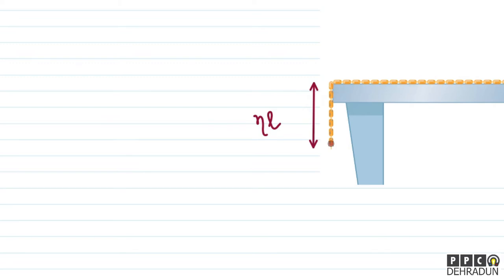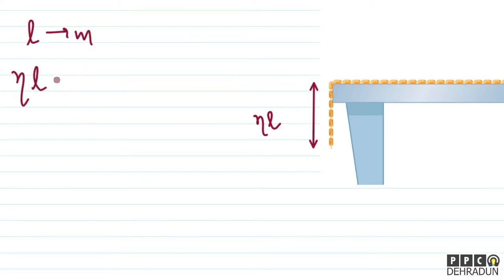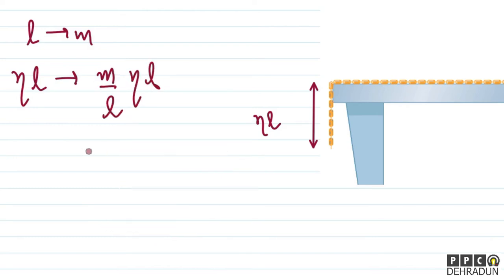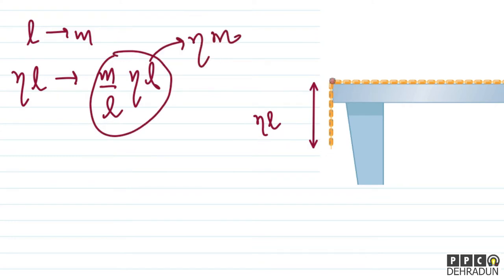हम लोग क्या कह सकते हैं कि इस पूरे portion of the chain पर force लग रहा है। अगर L length का mass M है, तो eta L length का mass कितना होगा? वो हो जाएगा M/L × eta×L, मतलब ये simply eta times M के बराबर आ गया। तो इस overhanging portion को देखें तो इस पर नीचे की तरफ pull करने वाला force है eta times mg।